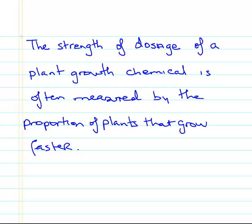Here's an example we're going to work with. The strength of dosage of a plant growth chemical is often measured by the proportion of plants that grow faster. Sometimes you're not explicitly told if it's a mean or proportion, so sometimes you have to dig it out a bit. Is it a mean or proportion that you're asked? Here it's obvious, but sometimes it's not immediately obvious. Is it a mean measurement or a proportion, number of successes out of certain number of cases?